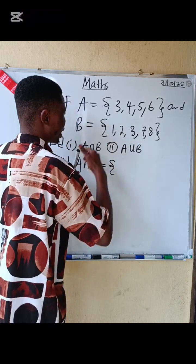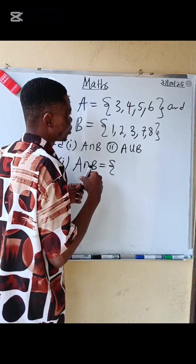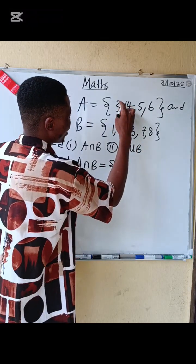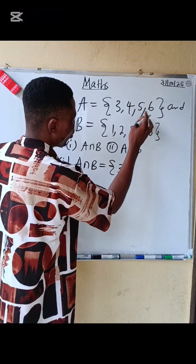Look at set A and set B. Those elements that you see in set A and also in B, you list them out. So here we have 3. Do we have any other element in common here? No.